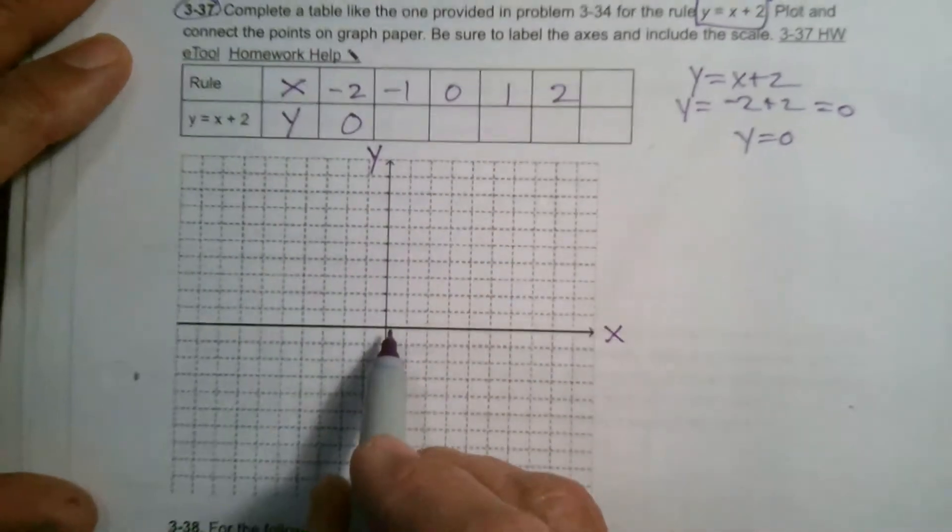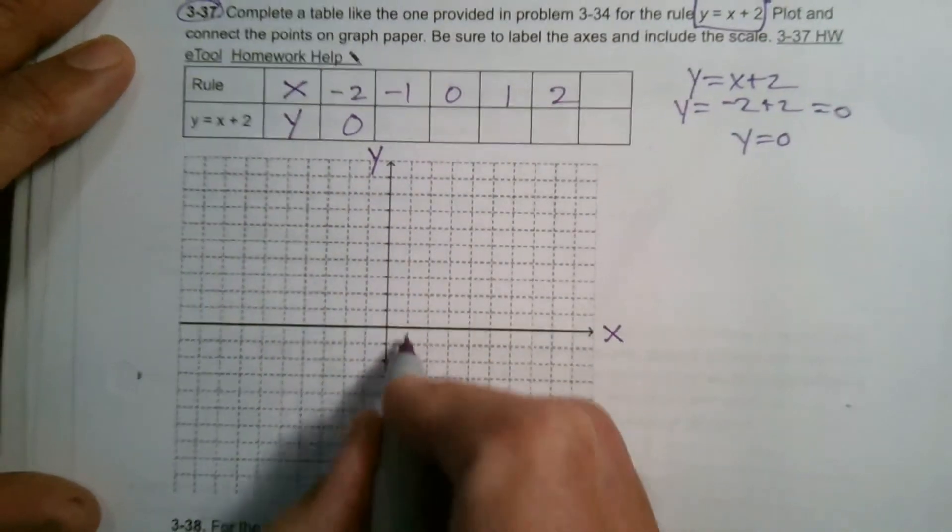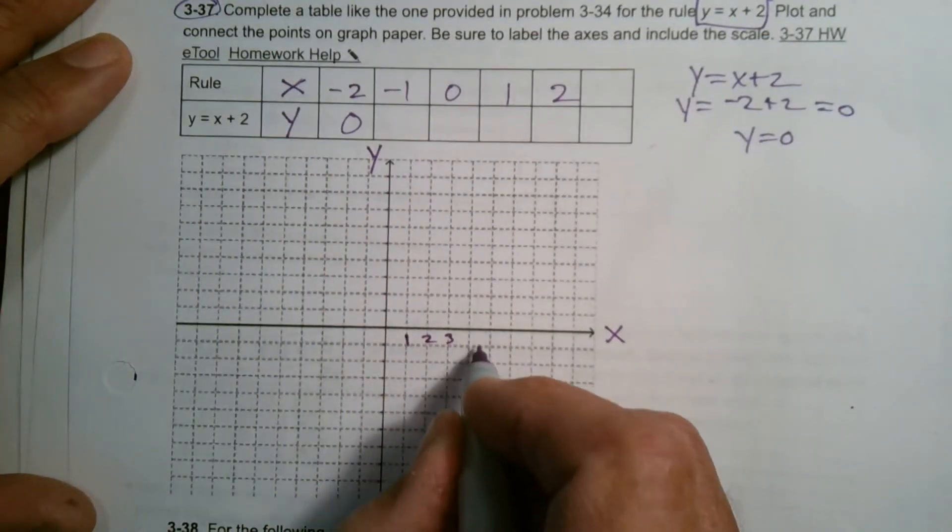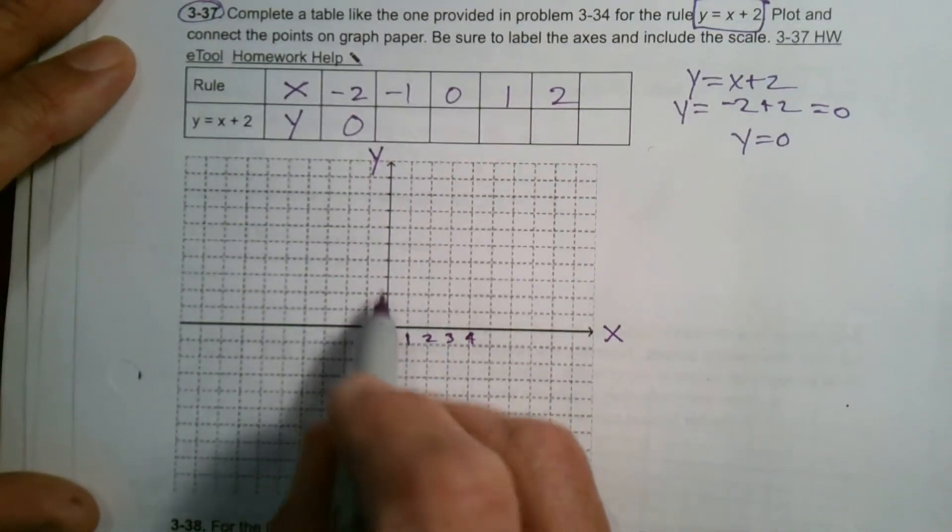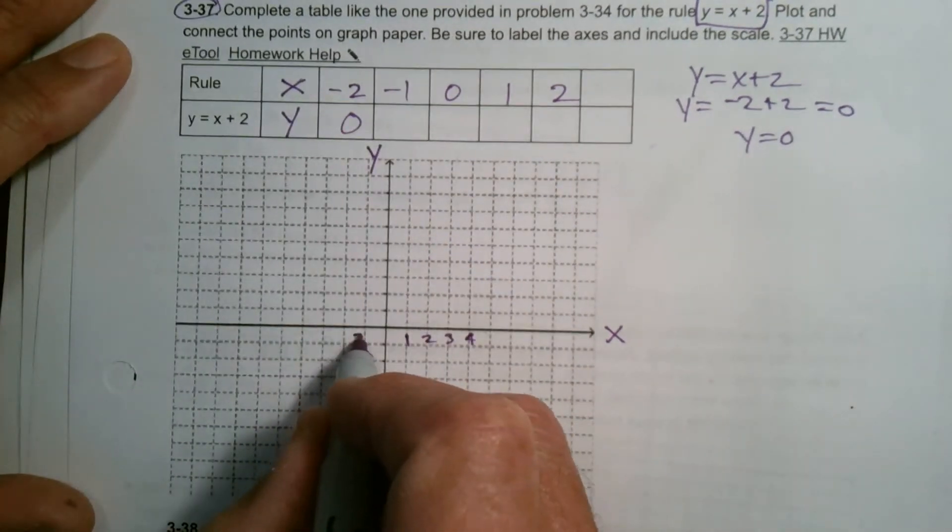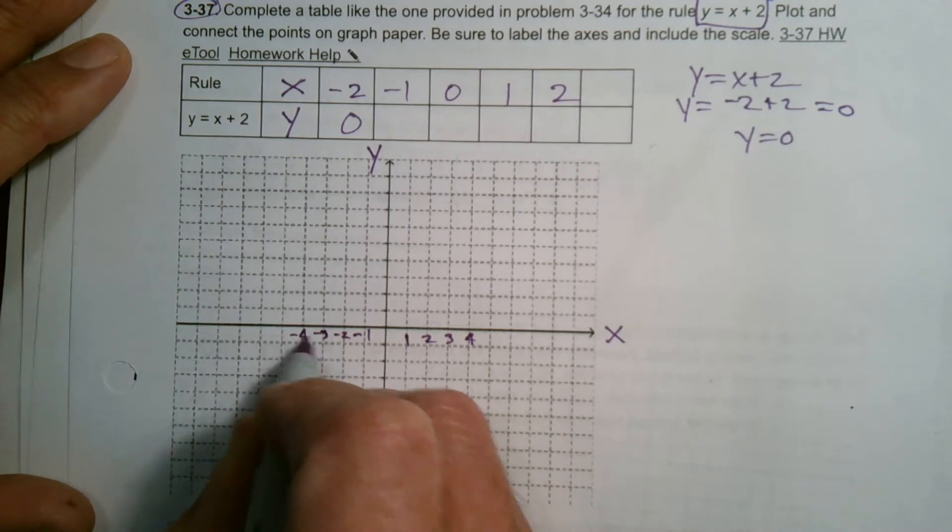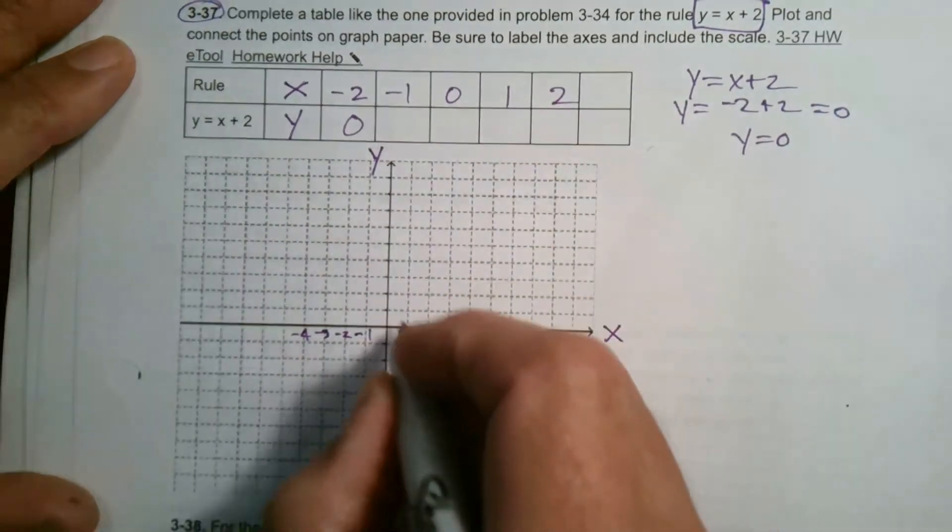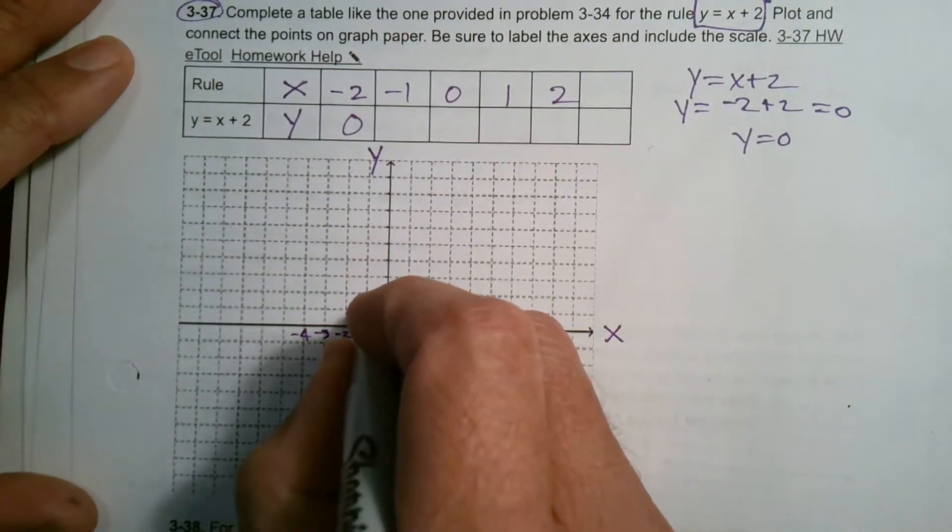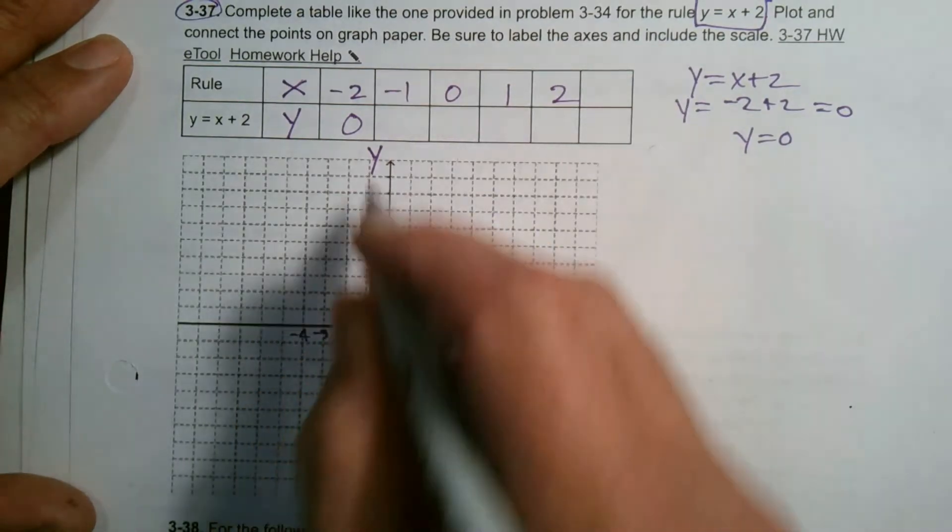And then we have to put in our scale. In this case, I'm just going to go by ones just to keep it simple. So each one of these, that's 1, that's 2, that's 3, 4, and so on and so forth. Those are my x values. My y values, I go this direction, negative 1, negative 2, negative 3, negative 4, and so forth. And then for my y, I'm going to do the same thing. I'll go by ones as well. So that's 1, 2, 3, 4, 5, 6, and so on.